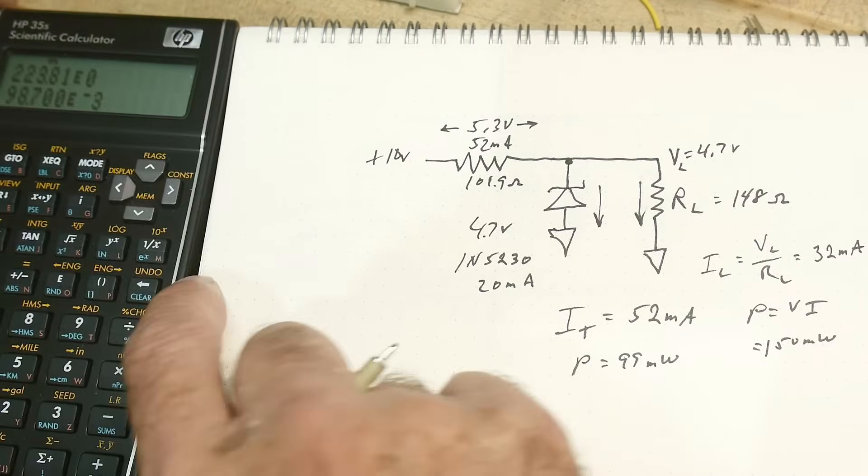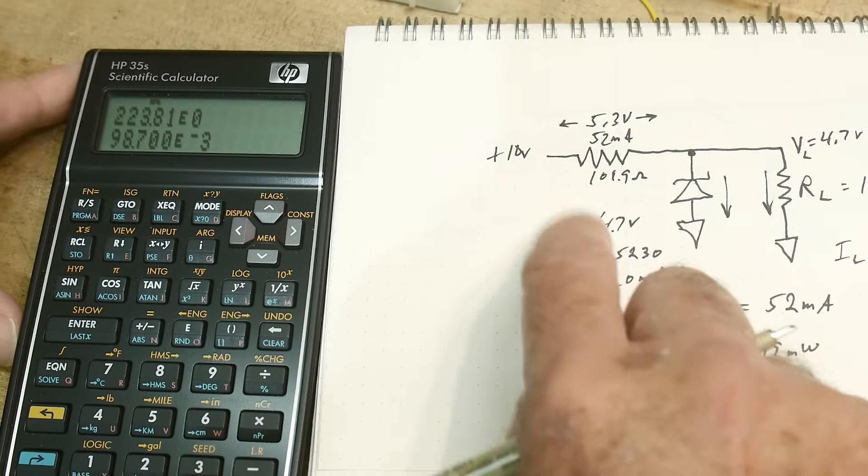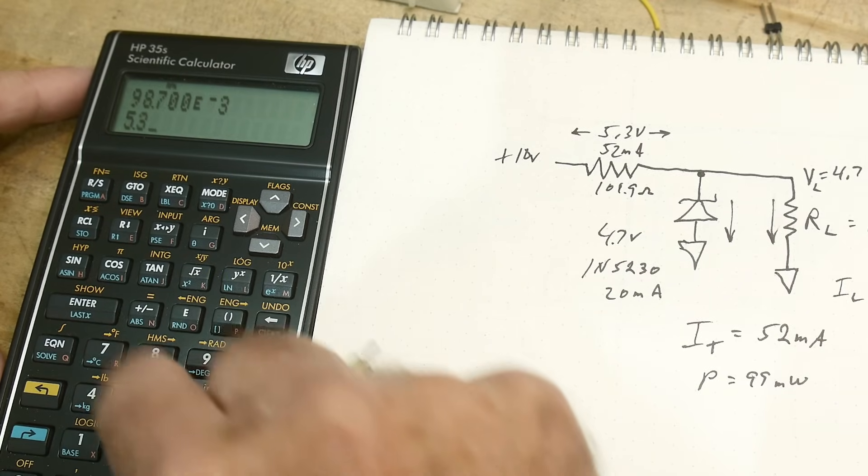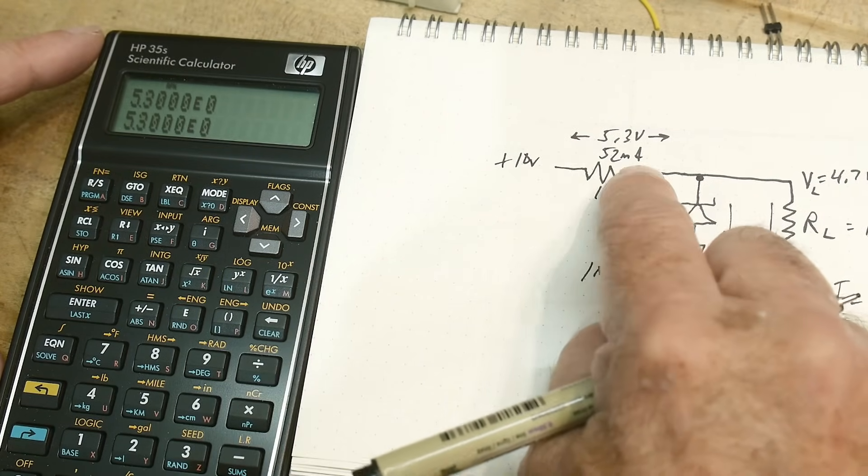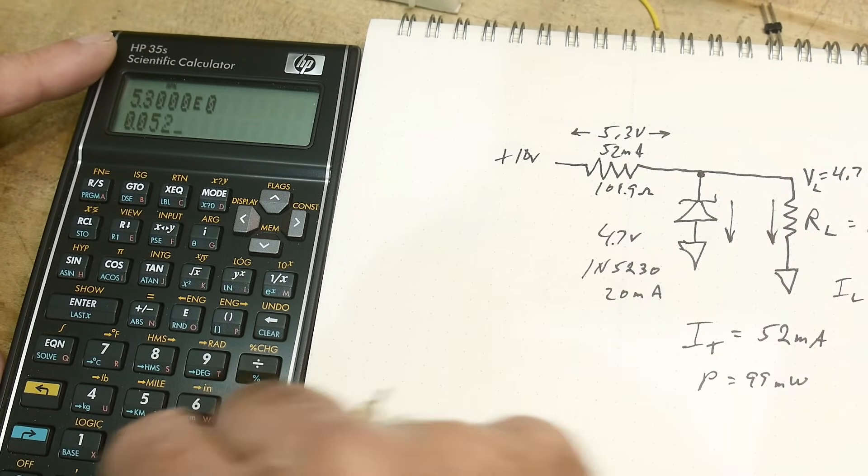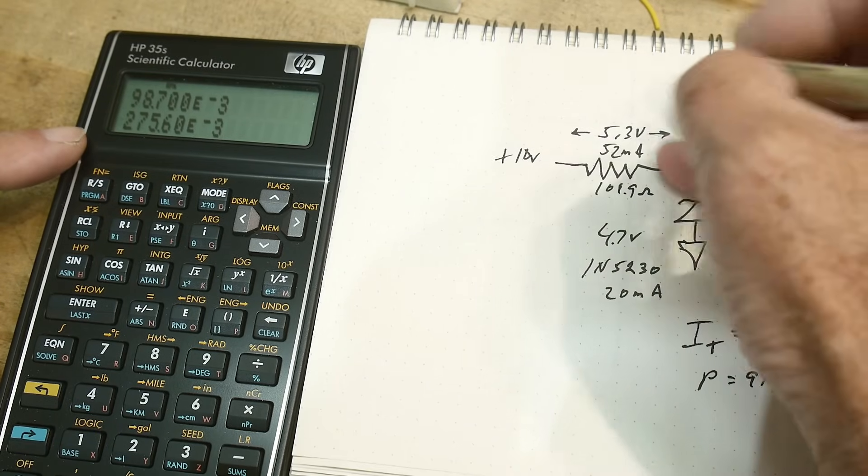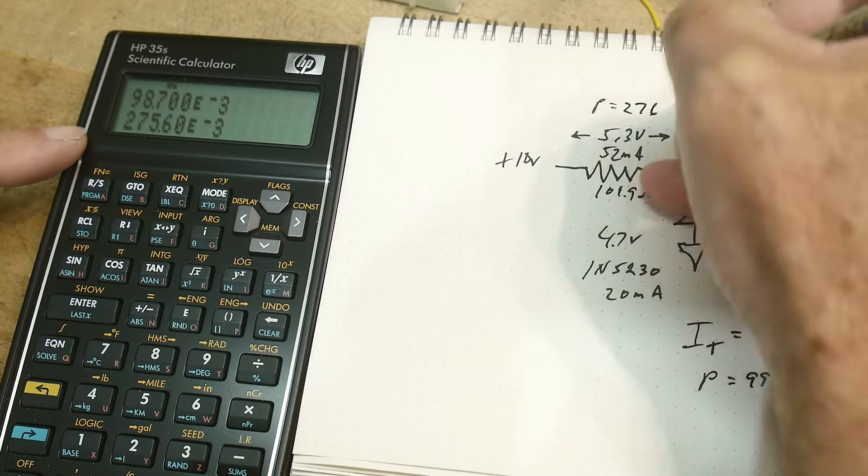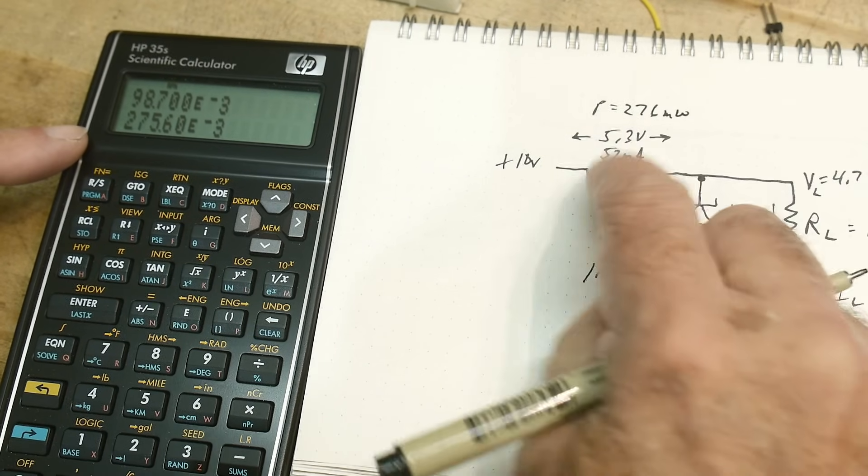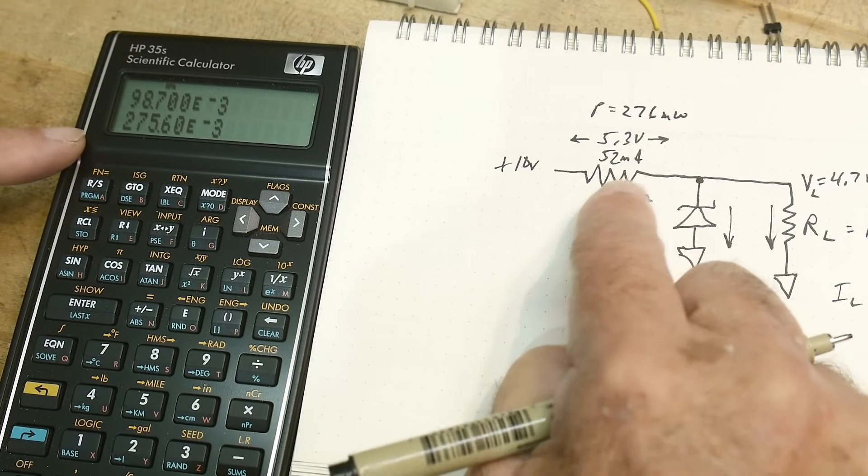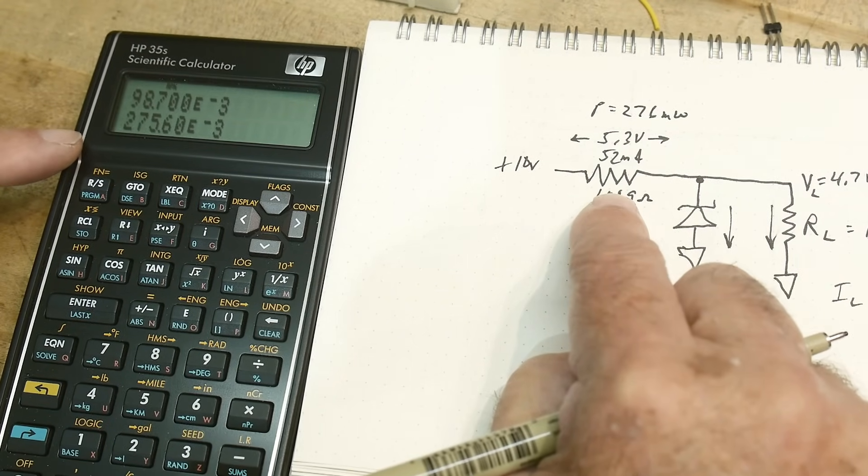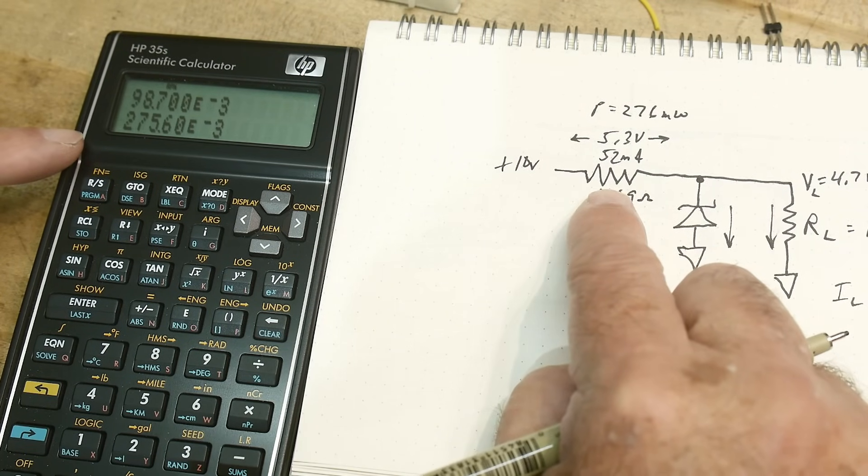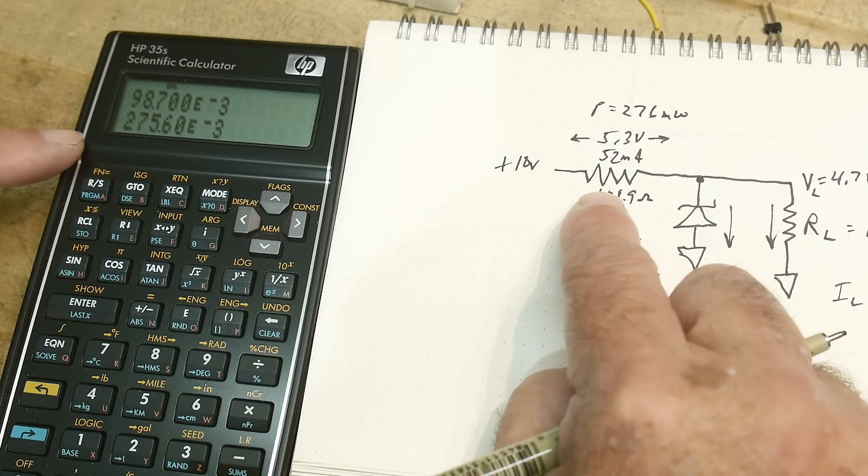And then let's calculate this over here. How much power do we have in this one? Well, we have 5.3 volts, and we have 52 milliamps going through that. So we have power here equals 276 milliwatts. 276 milliwatts. Well, that's bigger than a quarter watt. So we have to make sure that we do not put a quarter watt resistor here. We need at least a half watt resistor here.